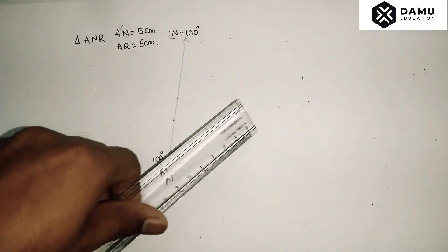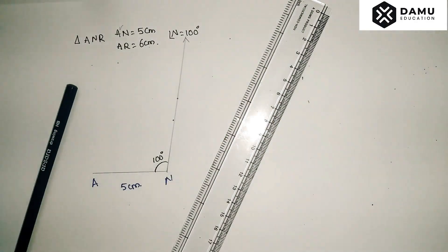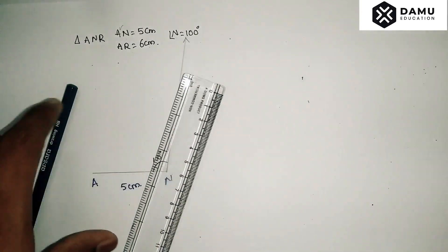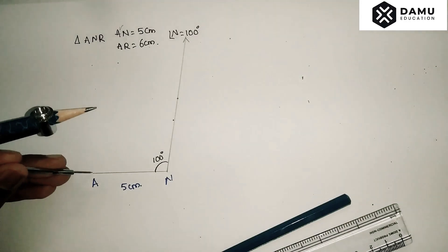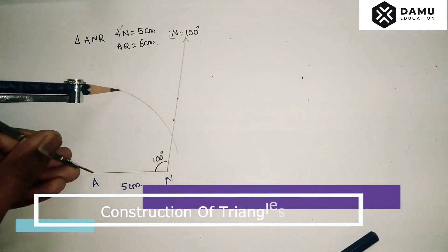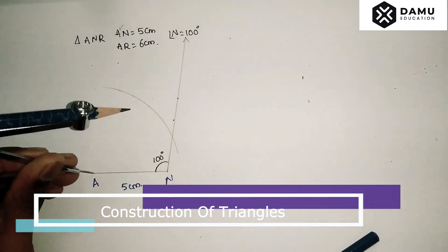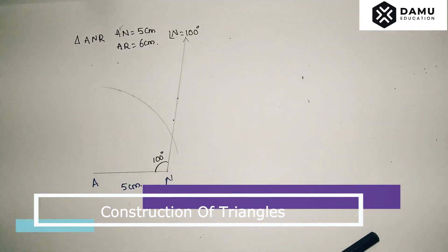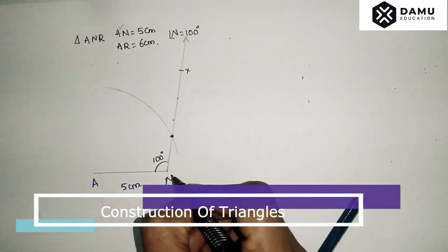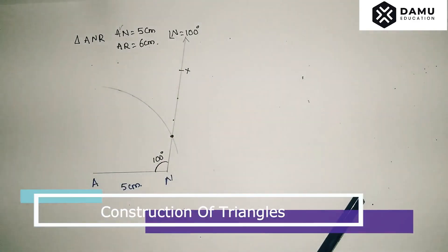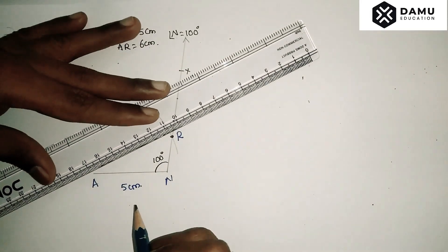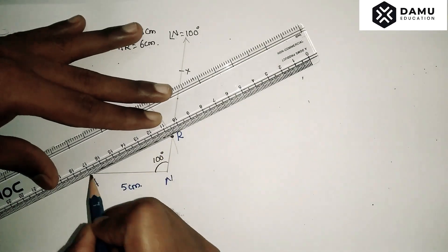Now take your compass and scale, and measure 6 centimeters — from 0 to 6. Coincide one side of the compass at 0 and the pencil at 6 centimeters. With A as center, draw one arc. The arc should coincide with the opposite ray. Locate the point where ray NX coincides with this arc — that point is R.